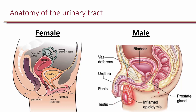In males, the opening of the urethra is much further from the rectum, making it much more difficult for translocation of bacteria from the rectum to the urethra. It is also much more difficult for bacteria to travel up the urethra in males. Therefore, urinary tract infections are more common in females compared to males.